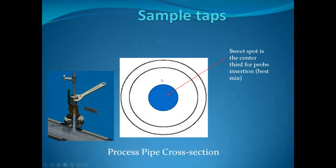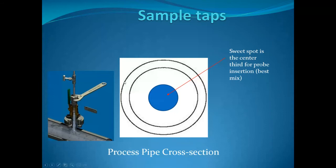It's important to consider where you pull your sample from. Some processes are well mixed, some are not; some are liquid, some are gas. Where we pull our sample from varies by application. Ideally you want a proper representation of what's going on inside the process. As a general rule, you pick from the center third of the pipe, because everything is hopefully mixed well enough there to give the most representative sample of the cross section.